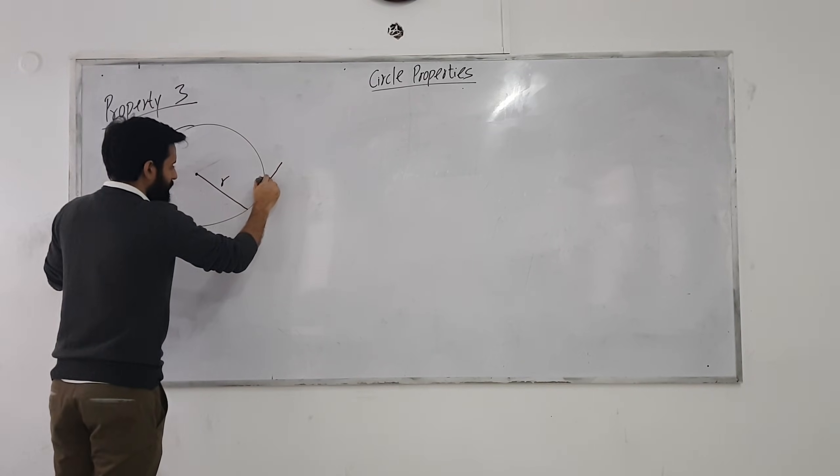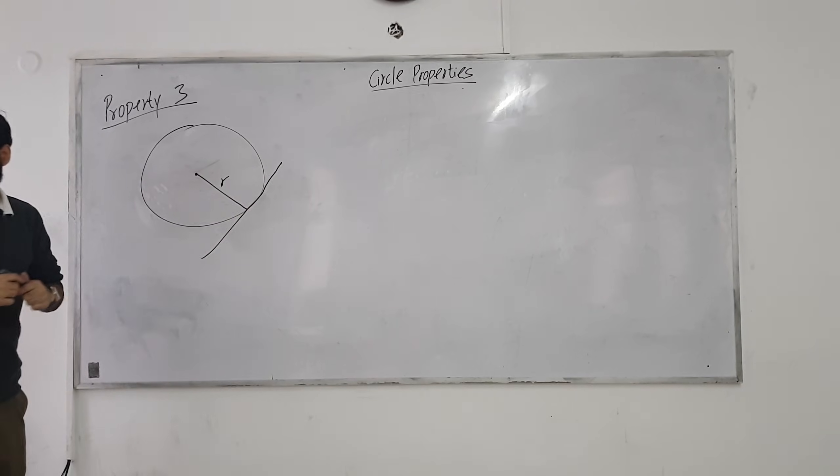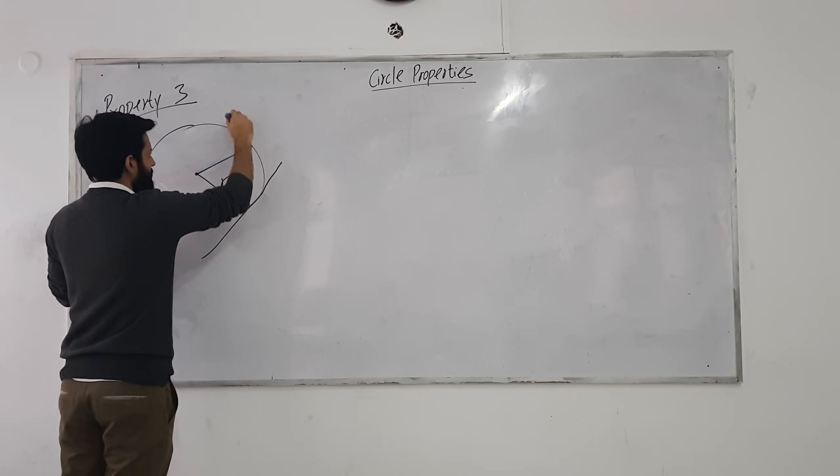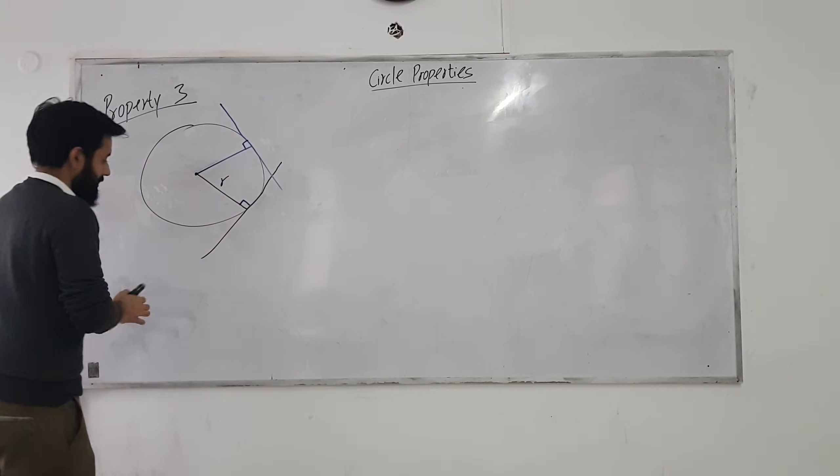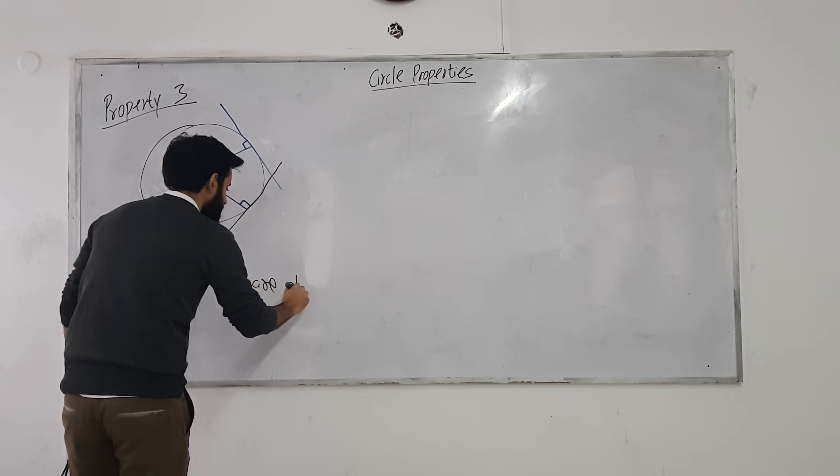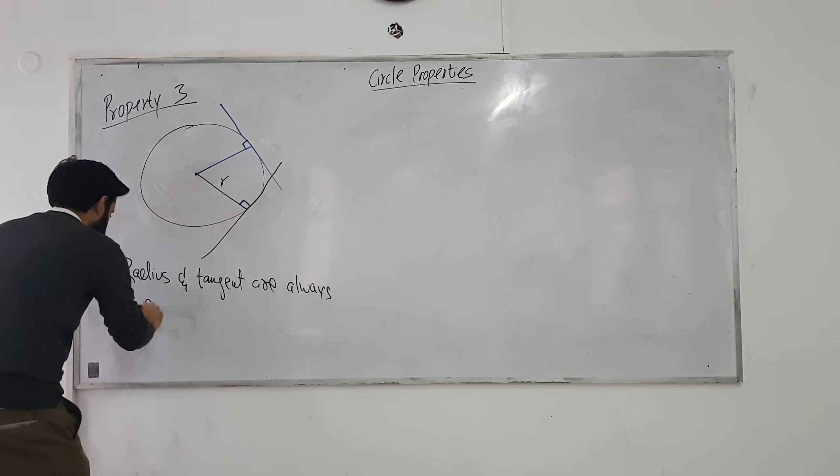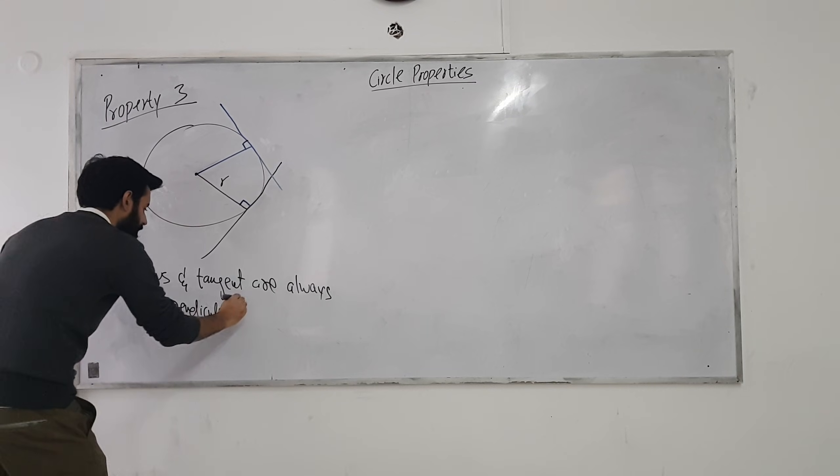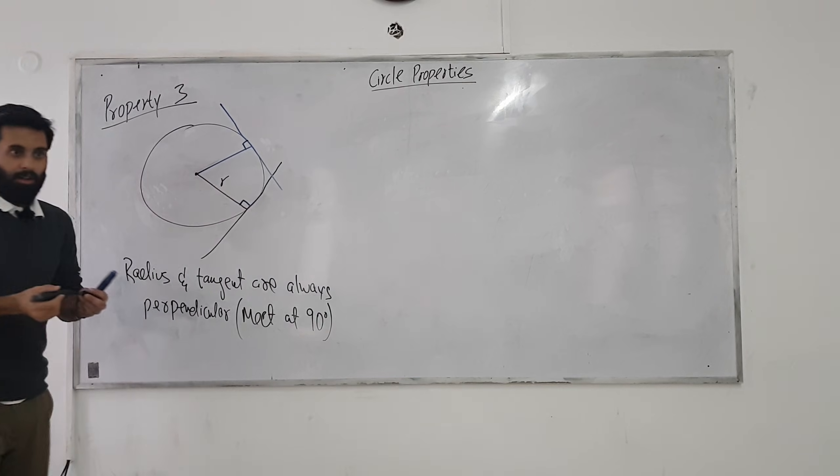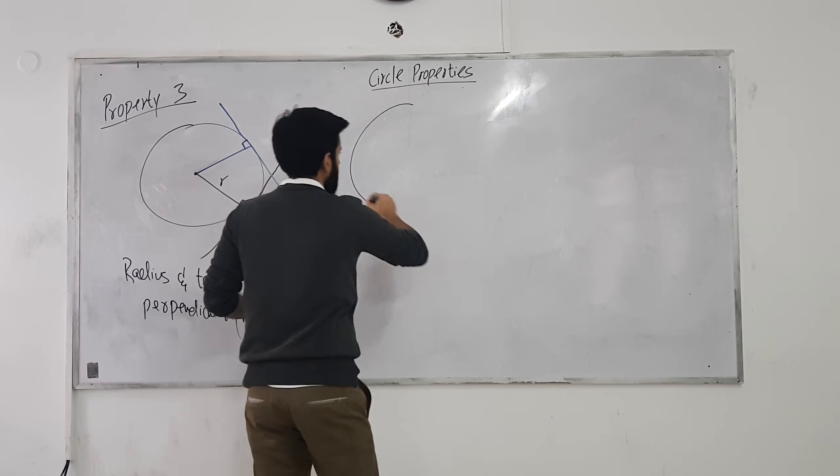The key words are that it should touch the circle or a curve at only one point. So you know what happens when radius and tangents meet? They form a 90 degree angle. Irrespective of wherever this happens, the angle that they'll form is a 90 degree angle. That's all there is in this property. Radius and tangent are always perpendicular.